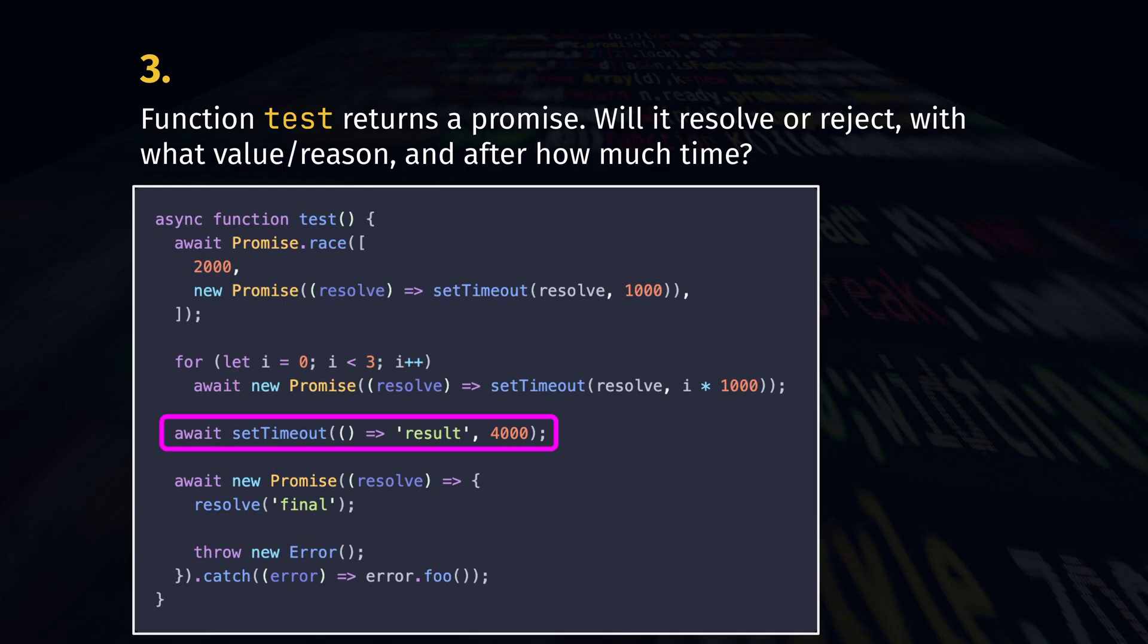Next, we have an await on the result of setTimeout, which is a number, not a promise. We resolve almost immediately, no time taken. Lastly, we have a promise that also resolves immediately with a value final. We throw an error,